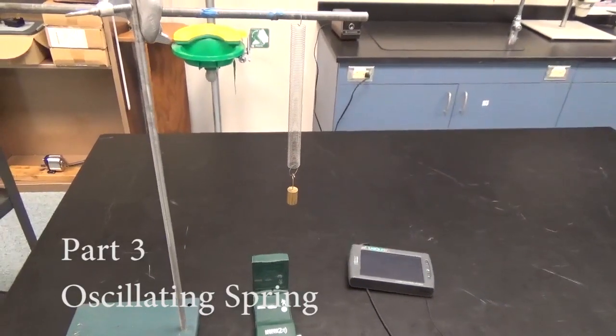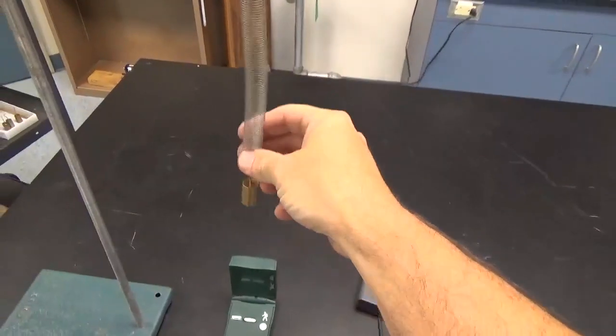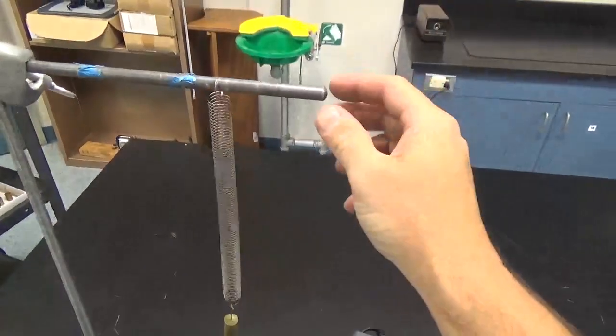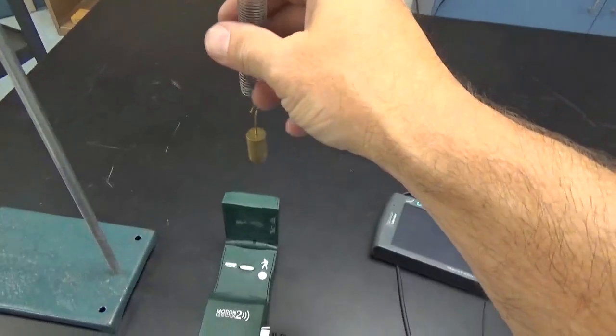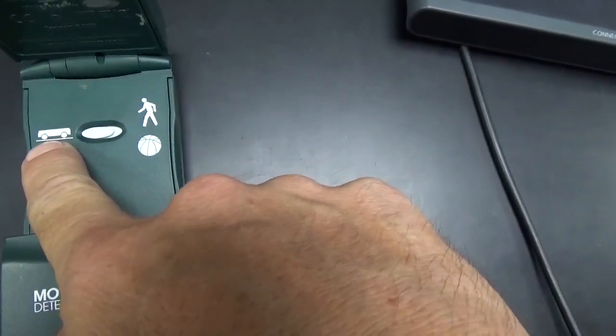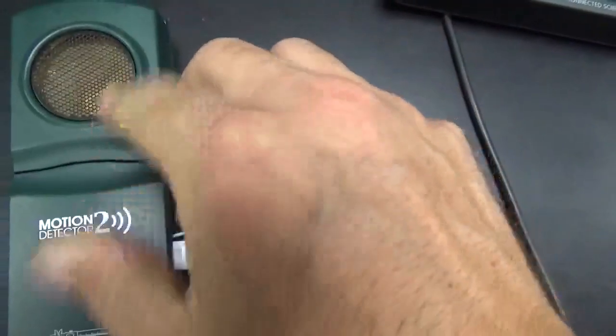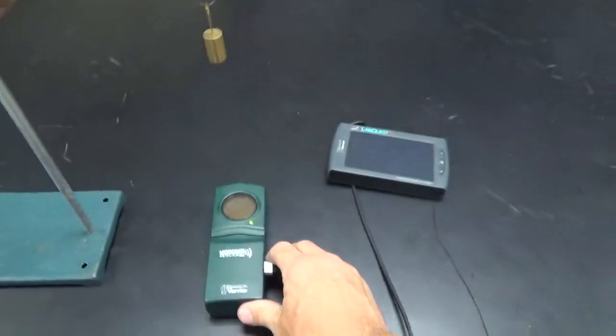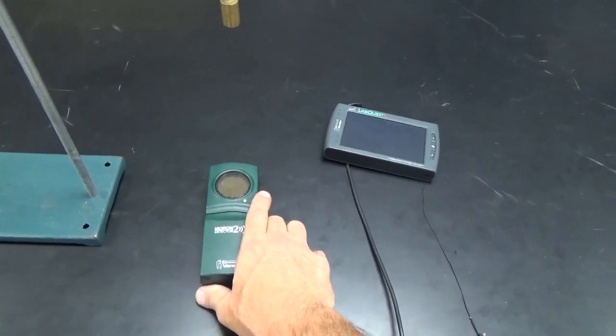Here's the setup for our oscillating spring. We've got a spring with a weight hanging from the ring stand, and we're going to put our motion detector below it. We're going to put it on the sensitive setting, which is the cart, and then we're going to close that and line it up right under the mass.